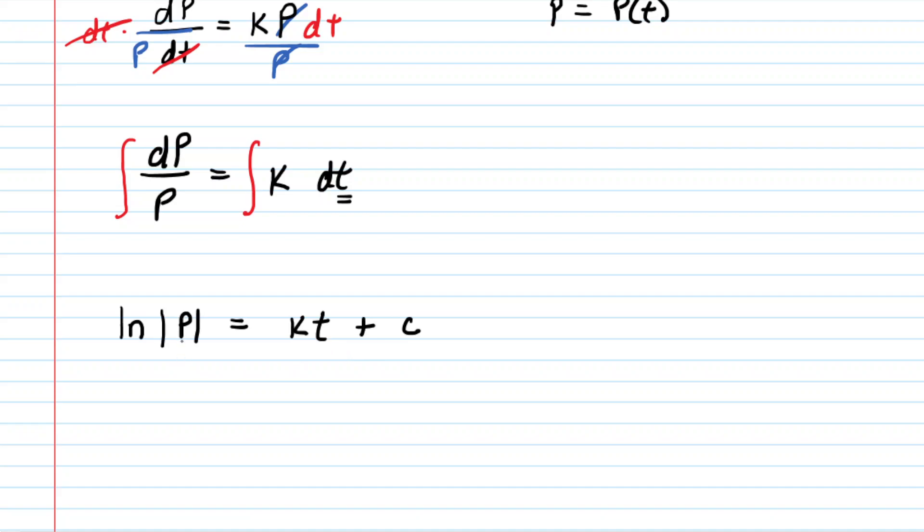And the next thing we want to do to solve for P is raise e to both sides of the equation. And essentially what happens is e and the natural log, because they're inverse functions, cancel each other out. So now we simply have isolated P. On the right side, we have e to the power of kt plus that arbitrary constant.